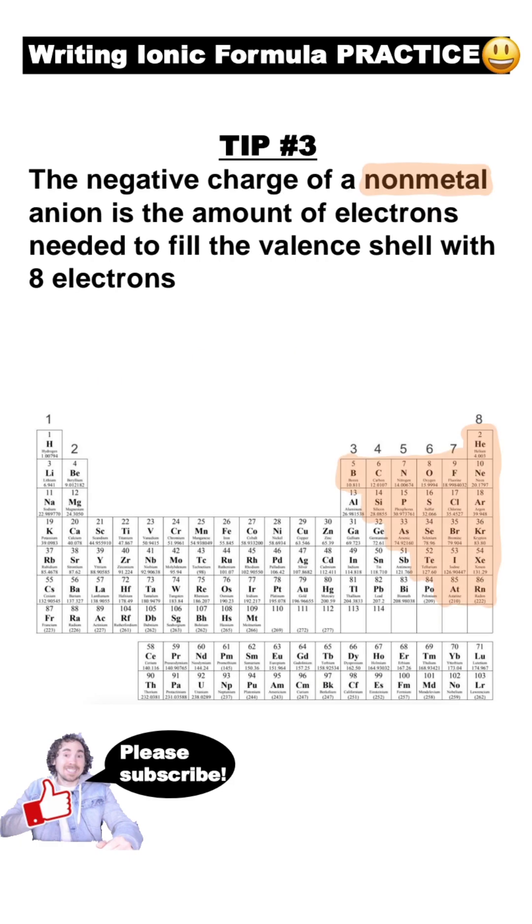Non-metals form ions as they gain enough electrons to fill their valence shell with eight electrons. Since the group number indicates the number of valence electrons, just figure out what you need to add to get to eight, and that will be its negative charge. So group five will need three electrons and they'll have a three negative charge. Group six will have a two negative charge, and group seven will be negative one.